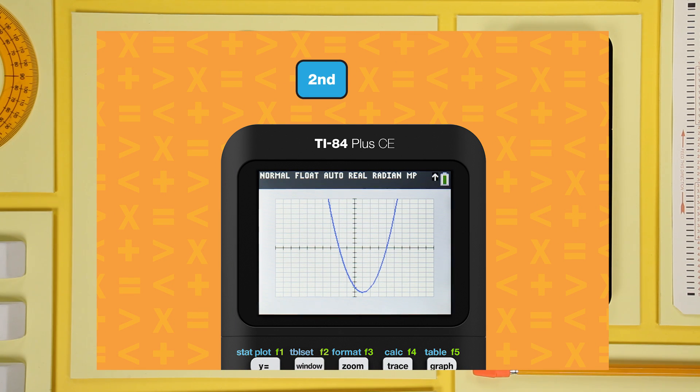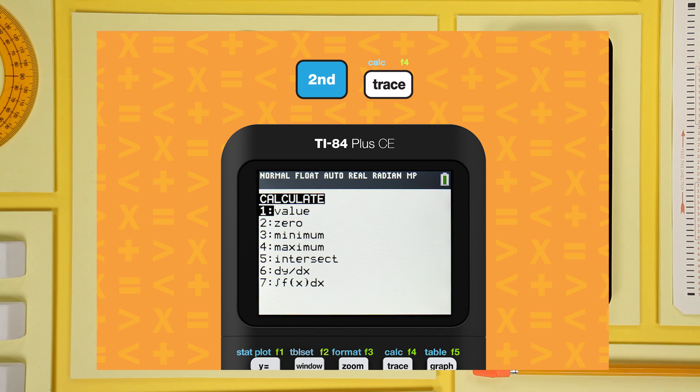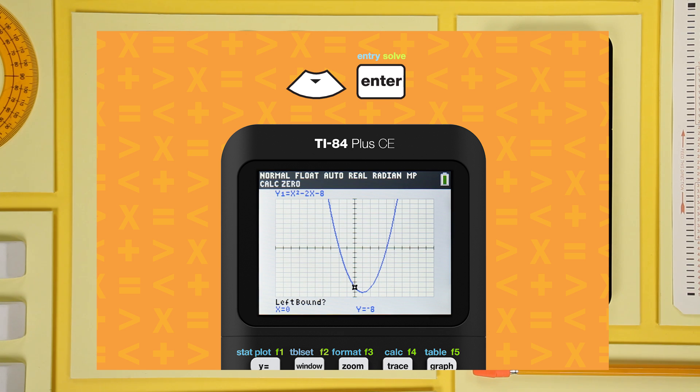Now press second, that activates the blue commands over the keys, and calc, it's over the trace key. Select zero from the menu, and that puts your cursor on the graph.